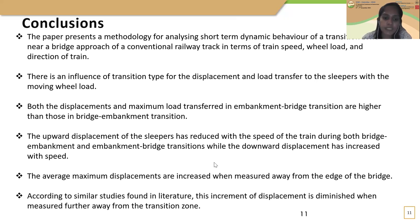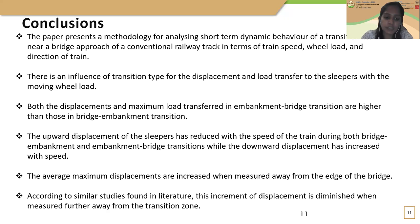This study analyzes the short-term dynamic behavior of transition zones near bridge approaches of a conventional railway track in terms of train speed, field load, and direction of train travel. There is an influence of transition type — bridge–embankment or embankment–bridge — on the displacement and load transfer mechanism to sleepers. Both the displacement and maximum load transferred are higher in embankment–bridge transition than in bridge–embankment transition. The upward displacement of sleepers reduces with train speed while downward displacement increases. The average maximum displacement increases when measured further away from the edge of the bridge, and according to similar studies in literature, this increment diminishes when measured further away from the transition zone.